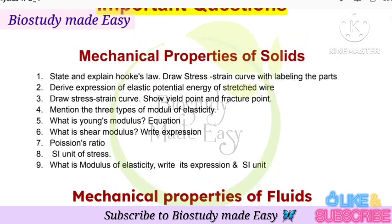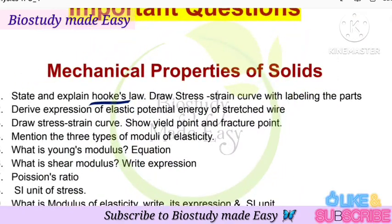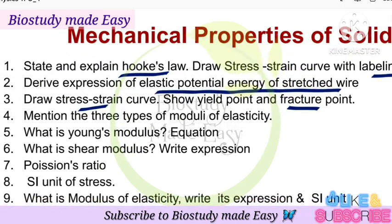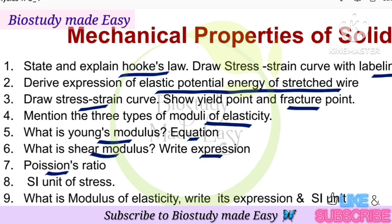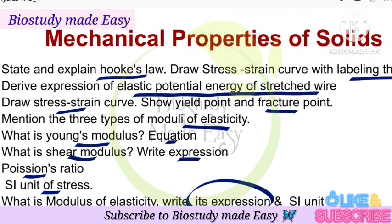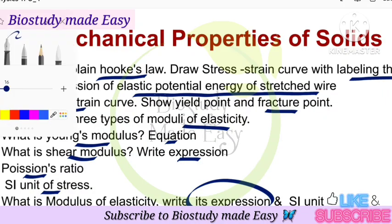First, state and explain Hooke's law and draw the stress-strain curve with labeling the parts. Derivation: expression of elastic potential energy of a stretched wire. The stress-strain curve — show yielding point and fracture point. Mention three types of moduli of elasticity. What is Young's modulus and write the equation? Shear modulus, its expression, Poisson's ratio, SI unit of stress, modulus of elasticity, and their expressions. These are the important questions from the Mechanical Properties of Solids chapter.